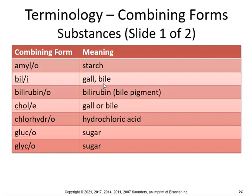Bilibiliary, pertaining to bile. Bilirubin — so if you have hyperbilirubemia, that is excess bilirubin in the blood. Coal, so gall or bladder — chololithiasis, abnormal condition of gallstones. Chlorohydro — think of hydrochloric acid. Gluc — gluconeogenesis, production of new sugar from proteins.